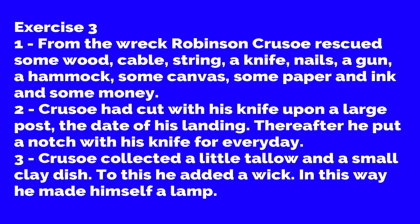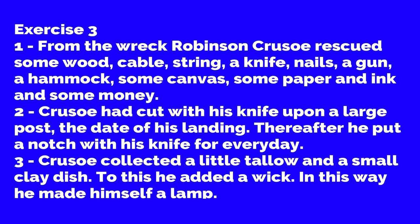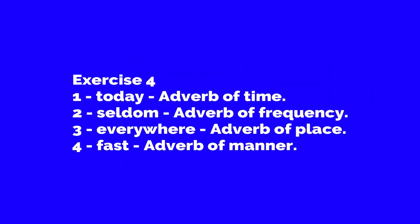Third: In what way did Crusoe make himself a lamp? Answer: Crusoe collected a little tallow and a small clay dish; to this he added a wick. In this way he made himself a lamp.